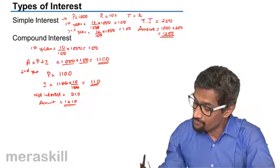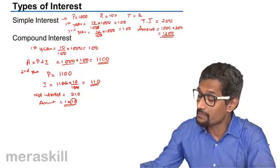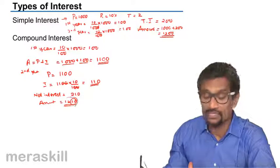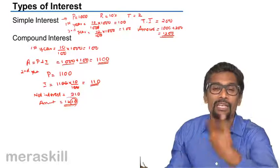So as a result of which, you have 10 rupees extra you are getting over here as compared to simple interest. For the third year, 1210 becomes the principal for the third year, which will again earn interest.